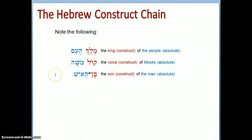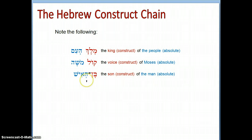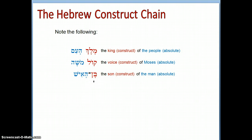Our next example is 'ben ha'ish' — the son of the man. Notice that 'ben' is made definite in our example because 'ha'ish' is definite — it carries the definite article. Because the definite article is on the absolute noun, all the nouns in the construct chain are made definite, giving us 'the son of the man.'